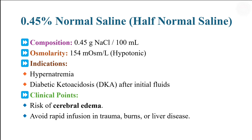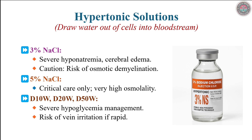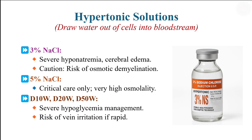Hypertonic solutions, such as 3% and 5% saline, have osmolarities exceeding 340 mOsm/L. They are reserved for severe hyponatremia with neurological symptoms or elevated intracranial pressure. Administer via central line to avoid phlebitis, and monitor serum sodium closely to prevent osmotic demyelination. Dextrose 10–50% solutions treat severe hypoglycemia but require slow infusion to prevent vascular irritation.